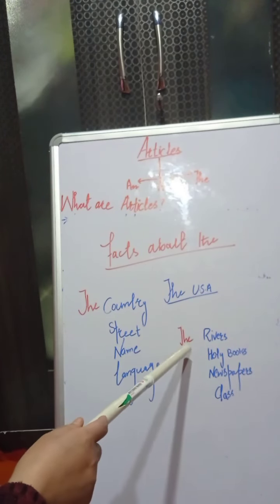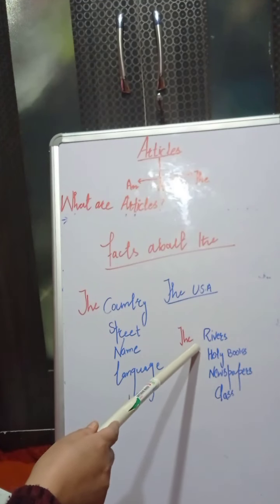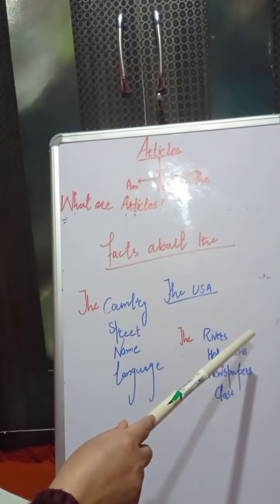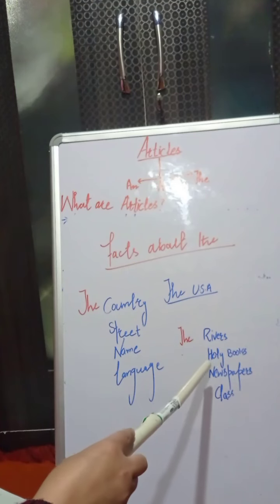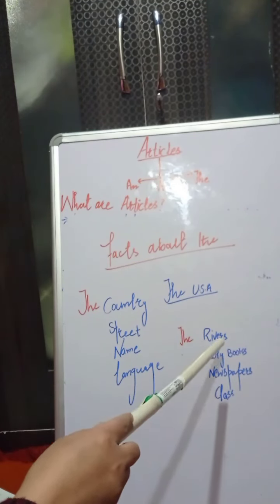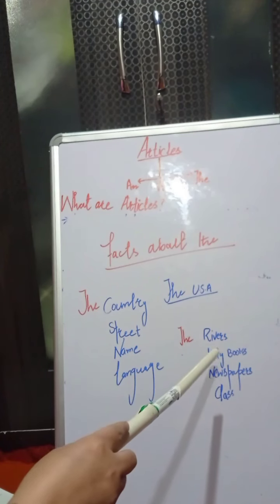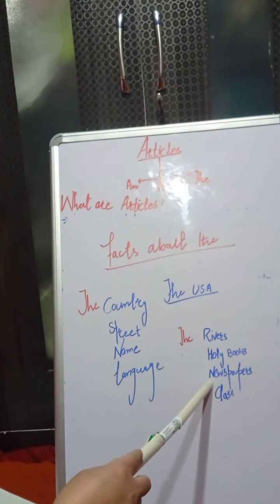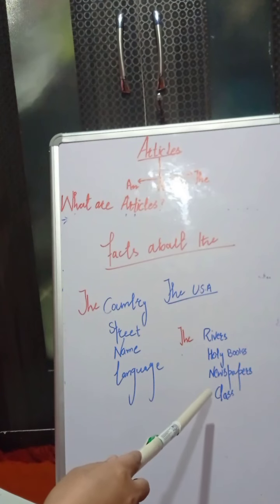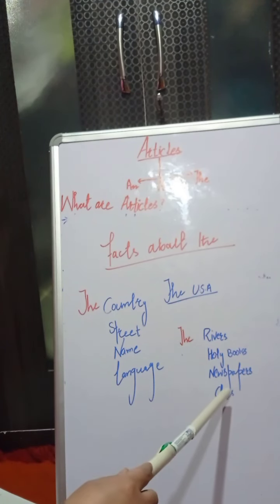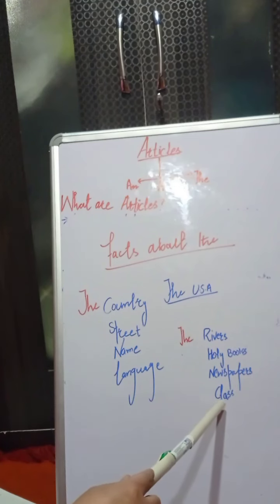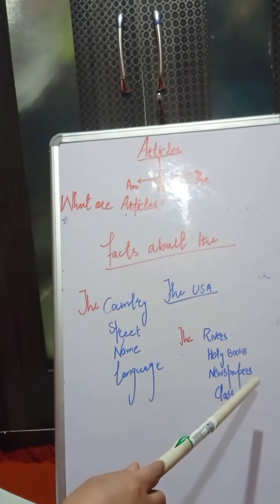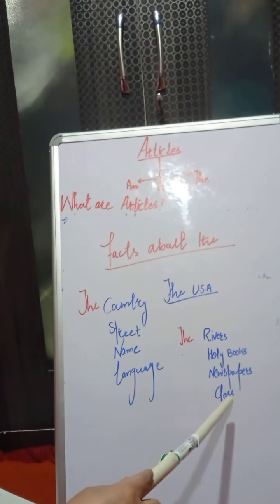We can use 'the' before rivers — the Ganga, the Jamuna, the Ravi. We can use 'the' before the names of holy books — the Quran, the Guru Granth Sahib, the Gita. We can use 'the' before the name of a newspaper — the Rise in Kashmir, the Greater Kashmir. And we can use 'the' before a class or group of animals — the horses, the dogs.